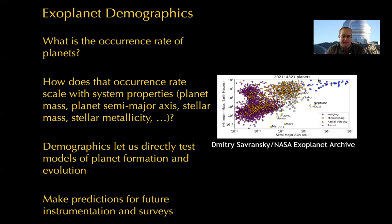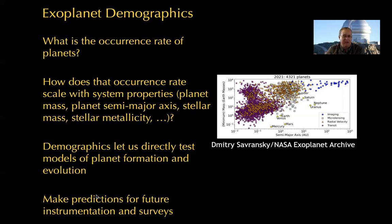We can learn a lot about the planet formation process by having very precise knowledge of exoplanet demographics, across all of parameter space — all across semi-major axis, all across mass, and all these additional dimensions as well. Also, if you're interested in designing a future survey or building future instrumentation, it's very useful to know about exoplanet demographics. You want to know where the planets are likely to be before you design your surveys. When NASA tries to design the instrumentation for HabEx or LUVOIR, they're going to think a lot about design trades — whether it's more advantageous to prioritize your working angle or contrast. The answers depend a lot on where we think the planets are around the nearby stars.